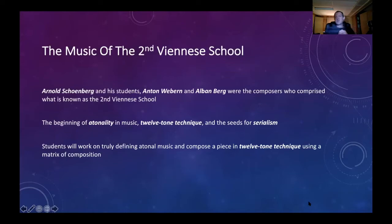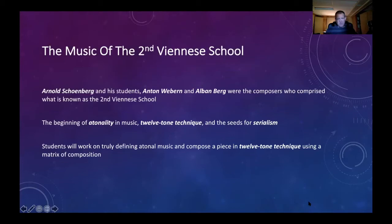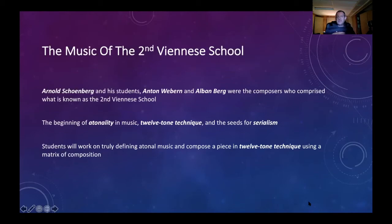He was using something called a matrix for composition — it has nothing to do with the Keanu Reeves trilogy — but he had a very mathematical way of organizing these pitches. He would start with a 12-tone row, then invert it, play it backwards, and invert the inversion backwards. There were many multitudes of ways to treat one row, and this was an attempt to stay true to atonal music. In my classes, students work on truly defining atonal music and compose a piece in 12-tone technique using a matrix of composition.